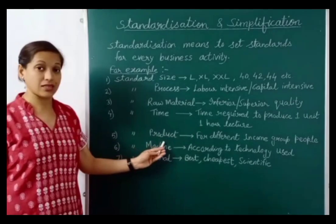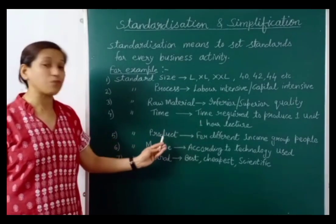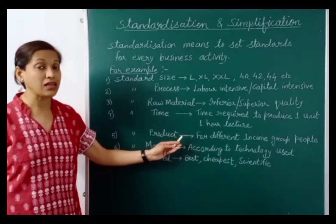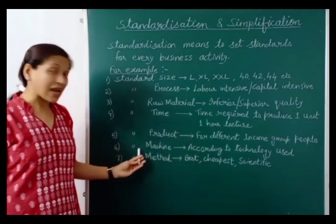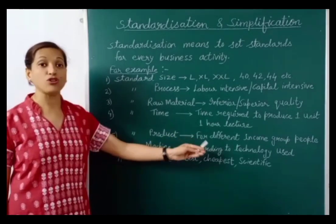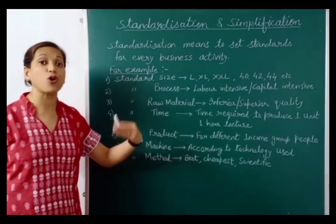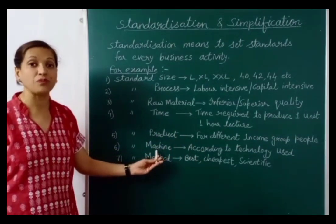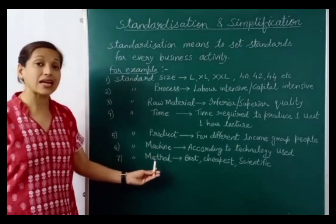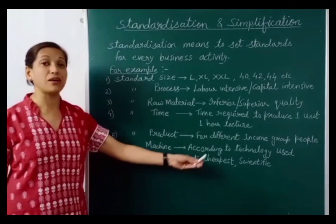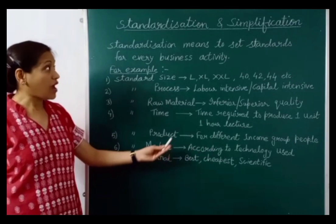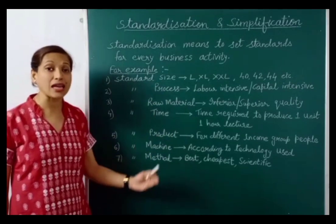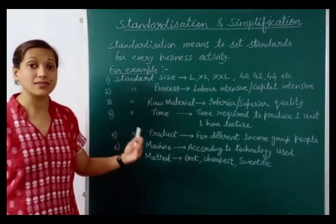Standard products differ for different income groups — high income, middle income, or lower income. Standard machines are set according to the technology used, reflecting company investment. Standard method refers to the best, cheapest and most scientific method. Every company must set its own standard parameters to produce any product or provide any service.